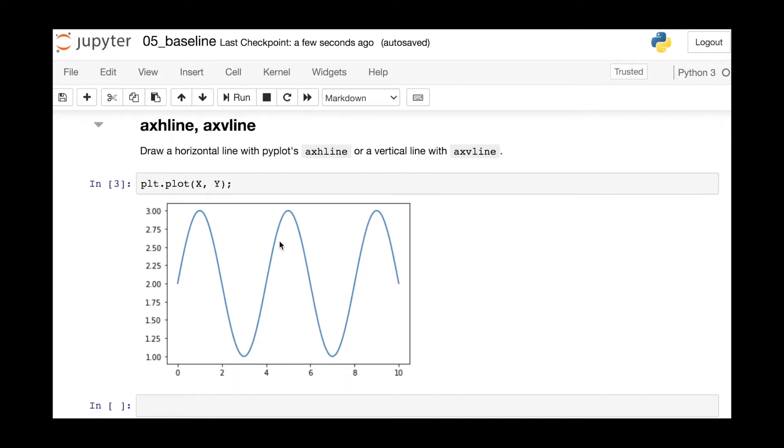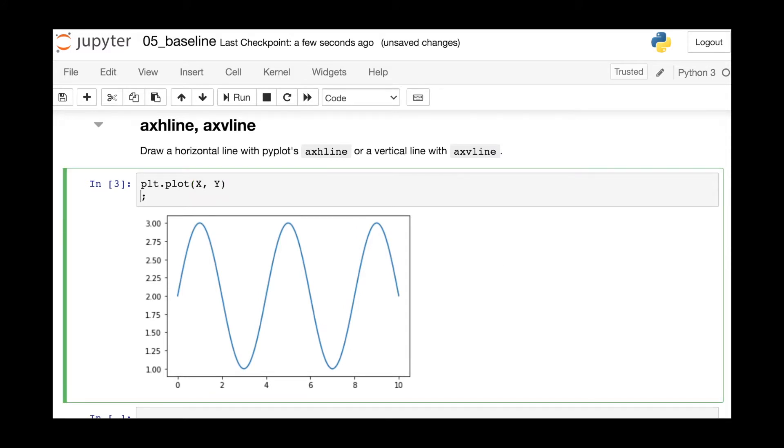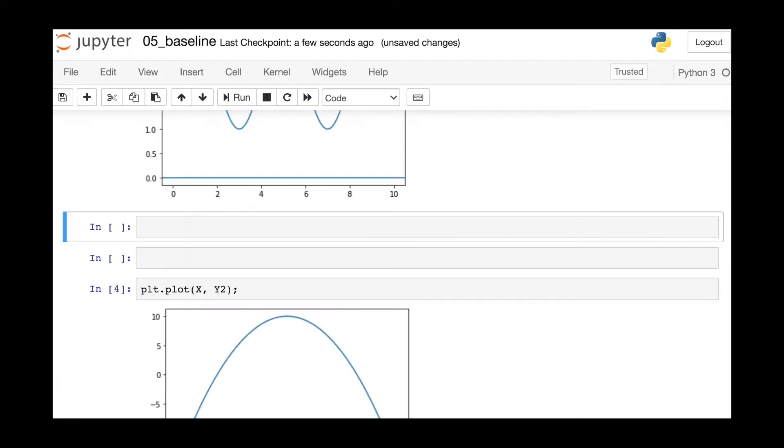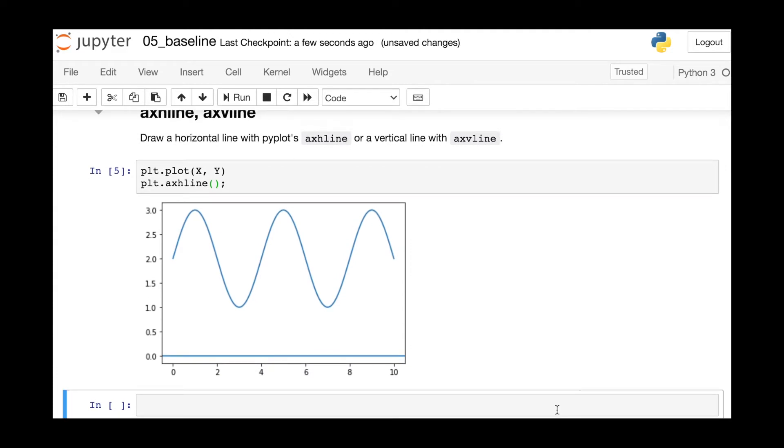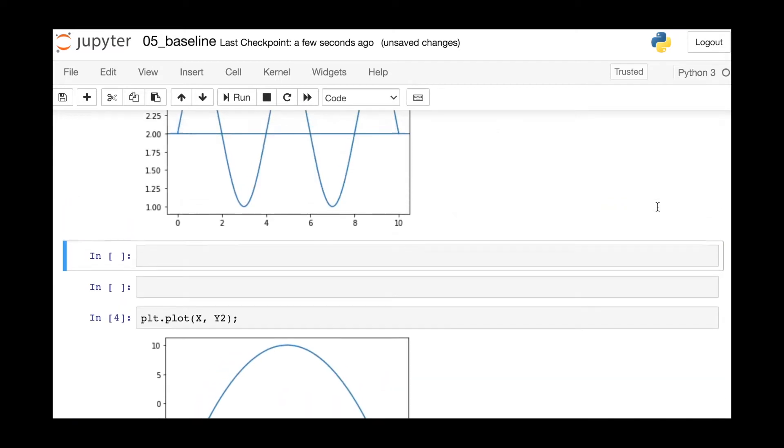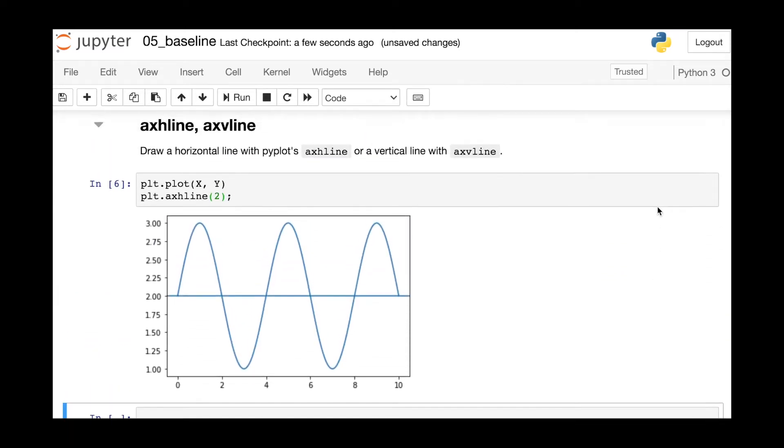Given this figure of a sine wave, let's go ahead and add a horizontal line to this plot. To do that, I just reference the PyPlot module and reference this axhline function. If I don't supply any input here, this function will assume I want a line at y equals 0. But let's go ahead and move that horizontal line up to y equals 2, and so I'll just pass in the number 2 into this function.